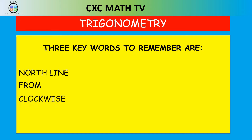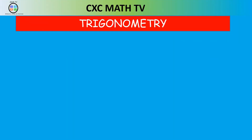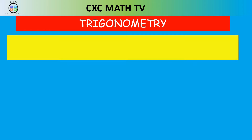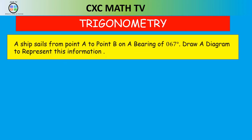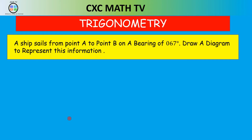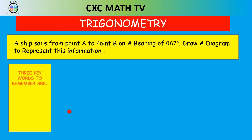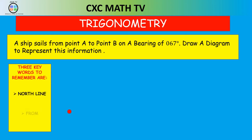Now that we have those three key words down, let's look at an example. A ship sails from point A to point B on a bearing of 067 degrees. Draw a diagram to represent this information. Remember the three key words: north line, from, and clockwise. So the first thing we do is draw our point A and then put on the north line.